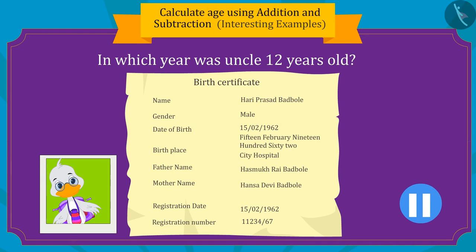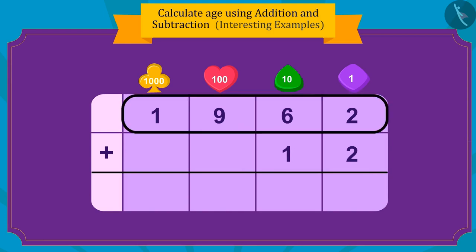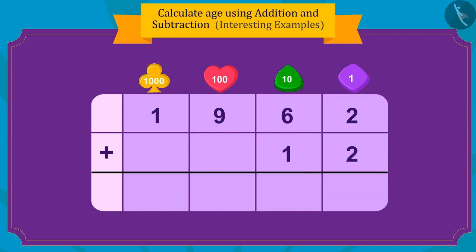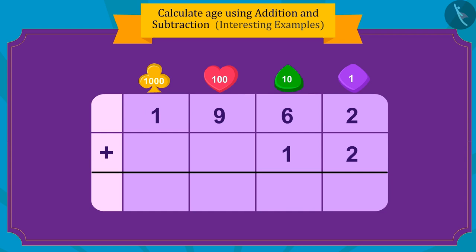If you want, you can pause the video and find the answer. Well done kids — you have found the right answer! Uncle was born in 1962, and to find out in which year he was 12 years old, we need to add 12 to 1962. Uncle was 12 years old in 1974.